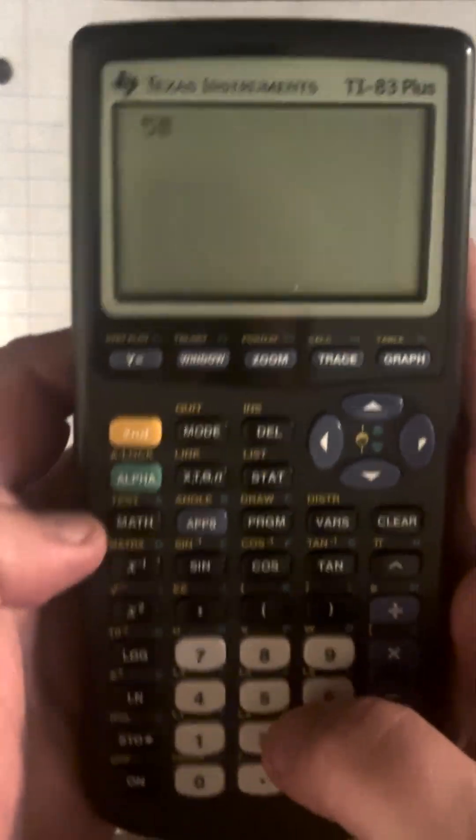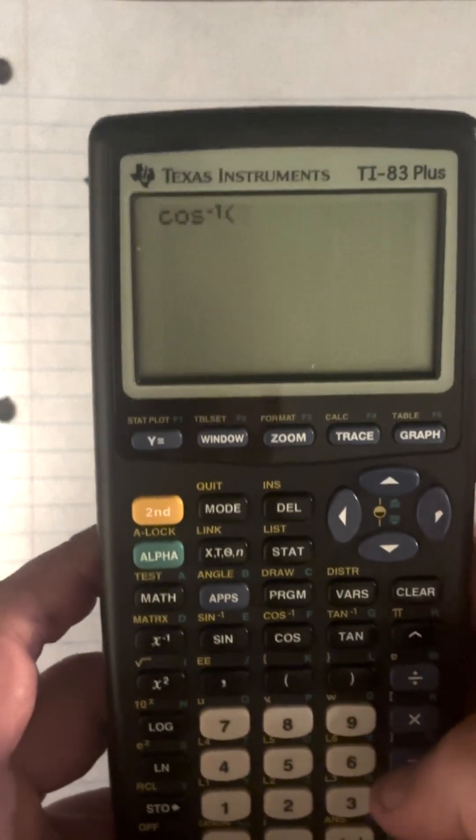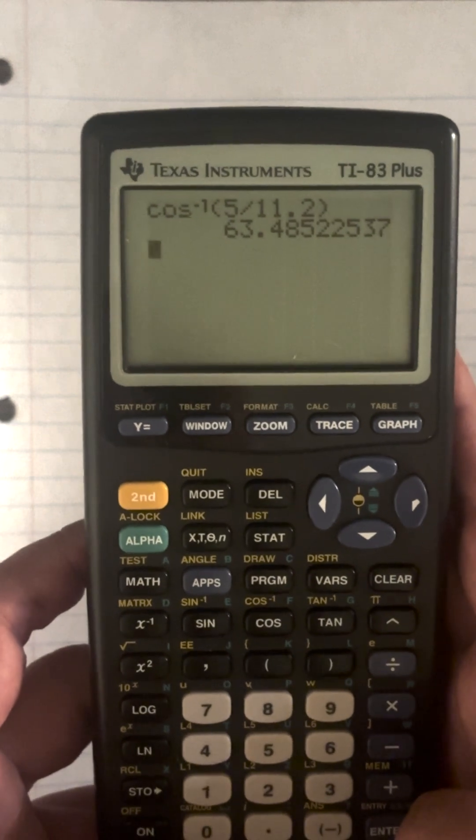Let's double check. So 5 times square root of 5 equals 11.2. So inverse operation of cosine 5 divided by 11.2 equals 63.4 degrees.